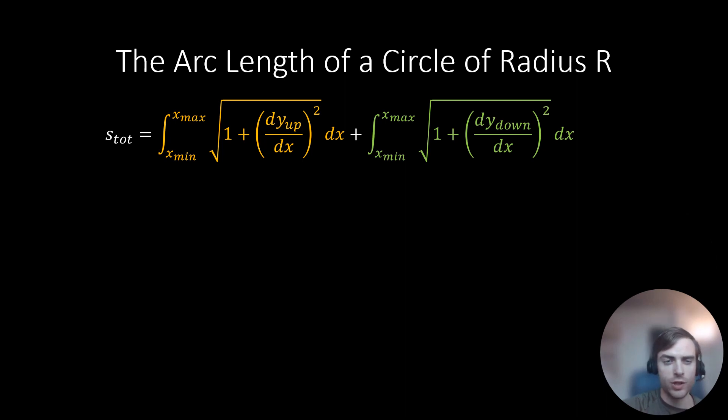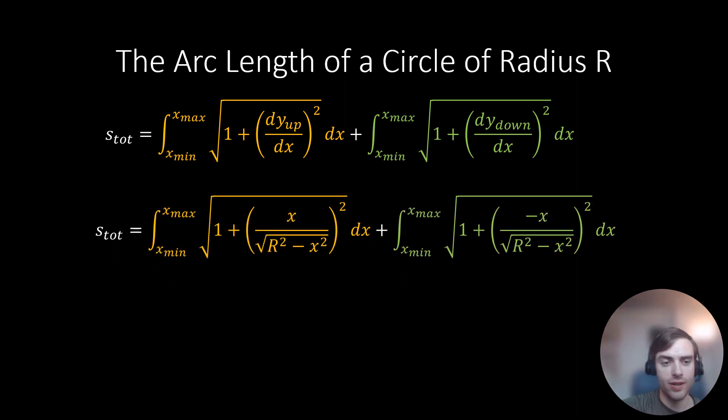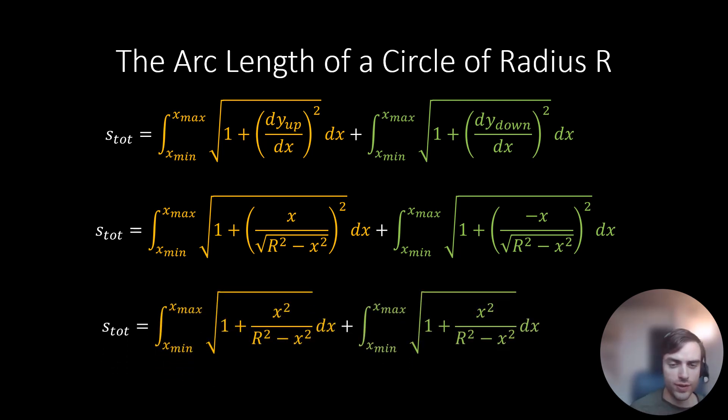So now beginning with our expression for the total arc length of our circle or its circumference, then if we substitute the derivatives of y_up and y_down with respect to x, then we get this expression over here. And upon further simplification, note that both the orange and green expressions are exactly the same. And this suggests some kind of symmetry across the x-axis.